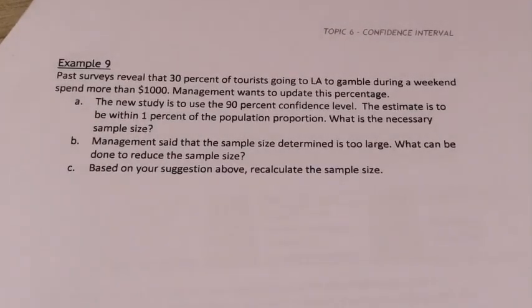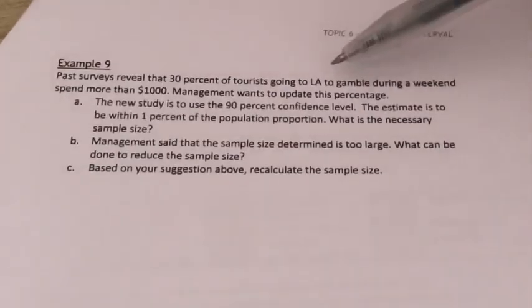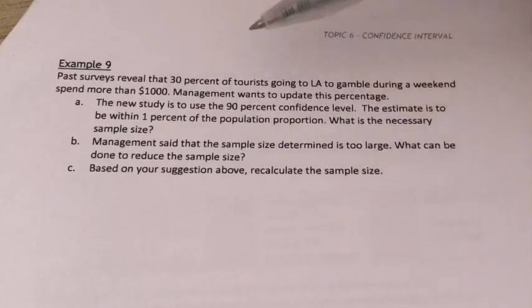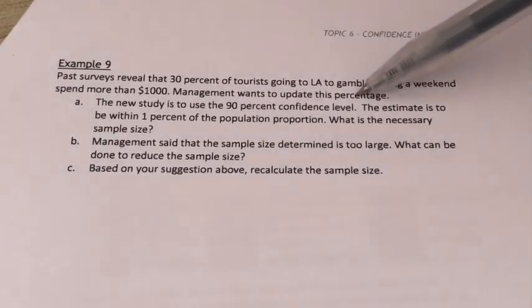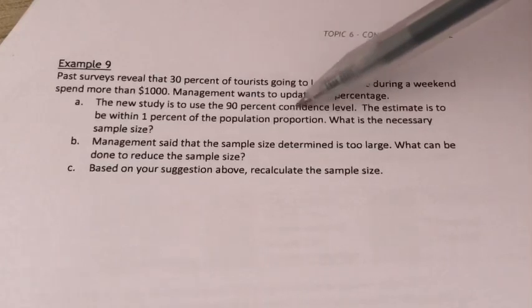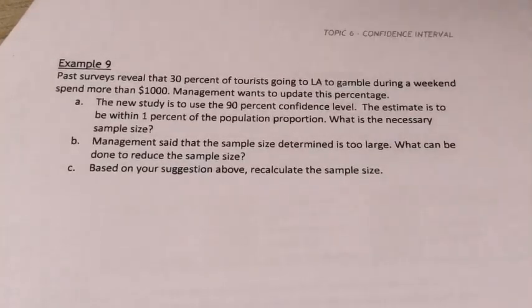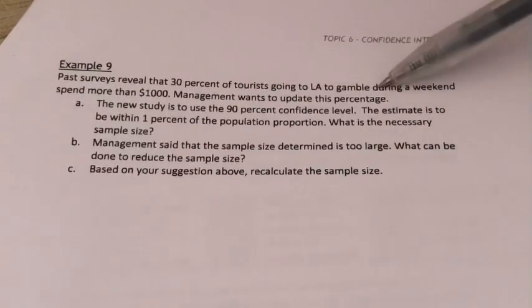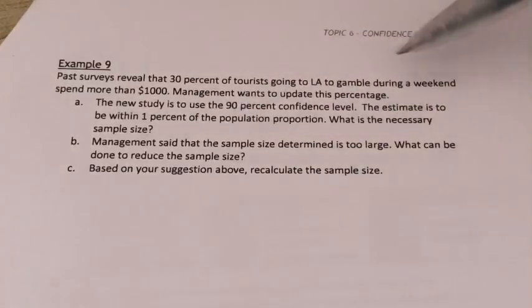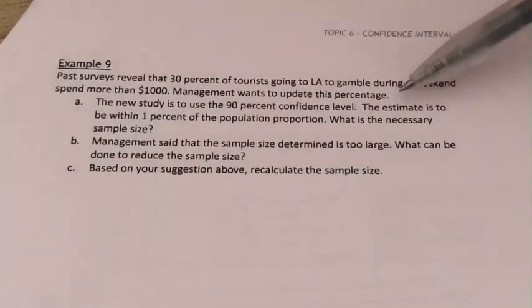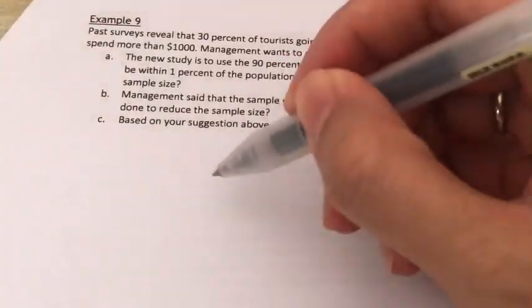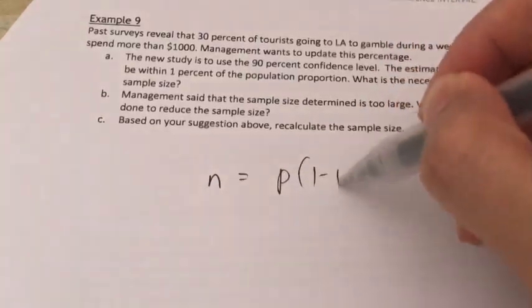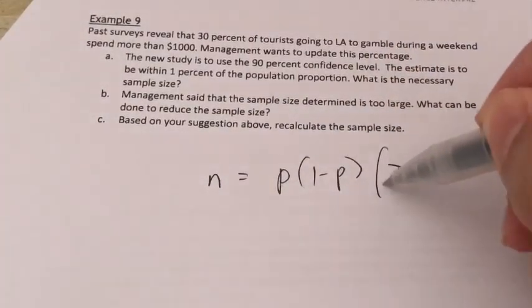Now let's look at example 9. Past surveys reveal that 30% of tourists going to LA to gamble during the weekend spend more than $1,000. Management wants to update this percentage. Part A: the new study is to use the 90% confidence level. The estimate is to be within 1% of the population proportion. What is the necessary sample size? We know that this is a question of proportion because we are not given any information on the sample mean or standard deviation. So we apply the formula for estimating population proportion: n equals P times (1 minus P) times (Z over E) squared.